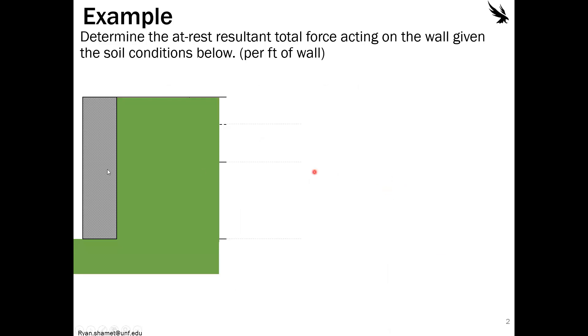So we have a gravity wall. We are asked to find the at-rest resultant total force acting on the wall given the soil conditions below. And remember, this is going to be per foot of wall. So we're looking at just a little cross section here. The wall is coming in and out of your iPad or laptop or phone or zoom or whatever you're watching this on.